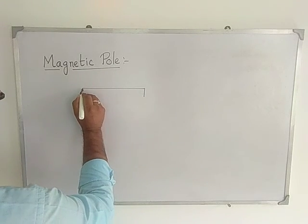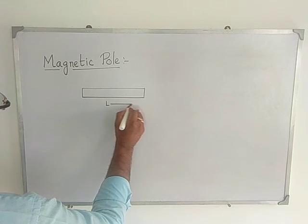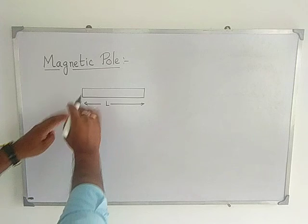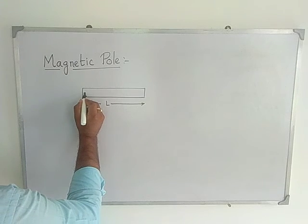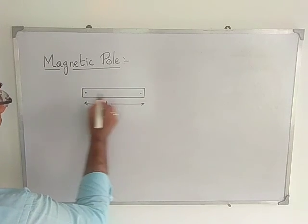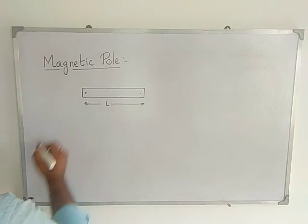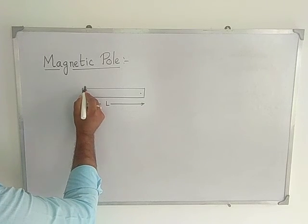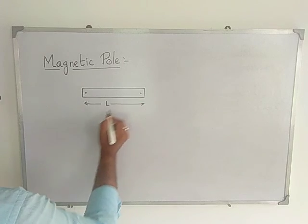If it is a bar magnet, and if we consider the geometric length of the bar magnet, when iron filings are scattered around the region where the bar magnet is placed, it is observed that slightly inside the geometrical length — near the ends — the region of attraction or repulsion appears maximum. So these two points are called the poles.